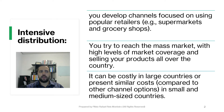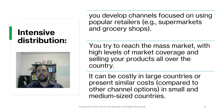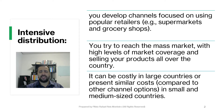The three options available are: intensive distribution. In this case, you're going to develop channels focusing on popular retailers. The idea here is to target and sell your product everywhere. Basically, your operations will deliver these products in every shop that you can, in every supermarket, in every place. Your idea here is to reach the mass market, and the idea is to cover the entire or a huge portion of the market, selling your products all over the country.